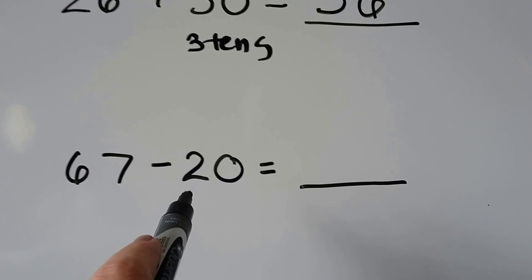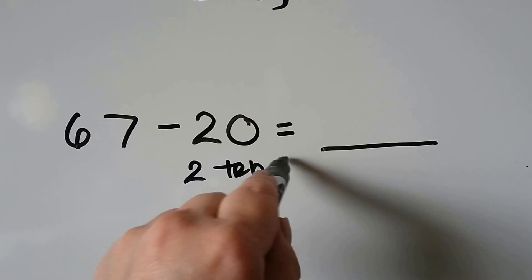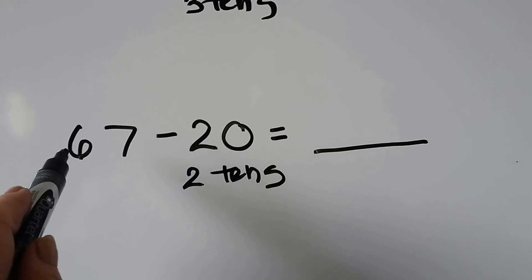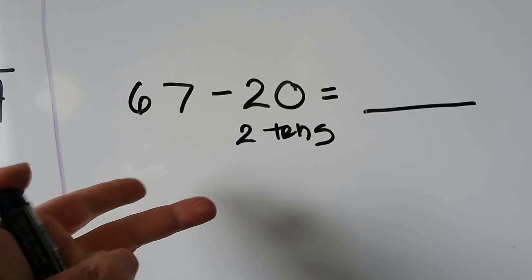Here we're going to count back 2 10s. 20 is 2 10s. We can start at the 67 and count back 2 10s. 67, 57, 47.